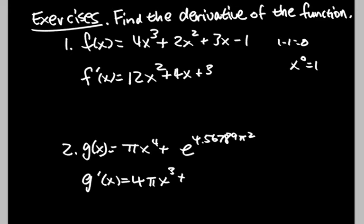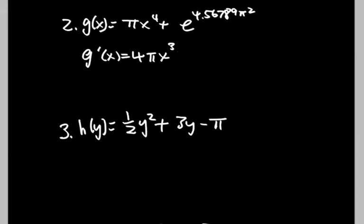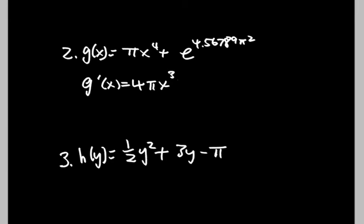All right, for this next one I suggest that you just pause the video, try it, and then continue. All right, so it's this: power goes down, so 2 times a half is 1, and then 2 minus 1 is 1. Derivative of 3y is just 3. Minus π, so the derivative of that is 0. And yeah, that's it.